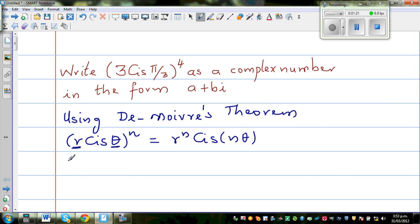So using that rule, I can write 3 cis π/3 to the power of 4. You are raising the modulus or absolute value by 4, so 3 to the power of 4.